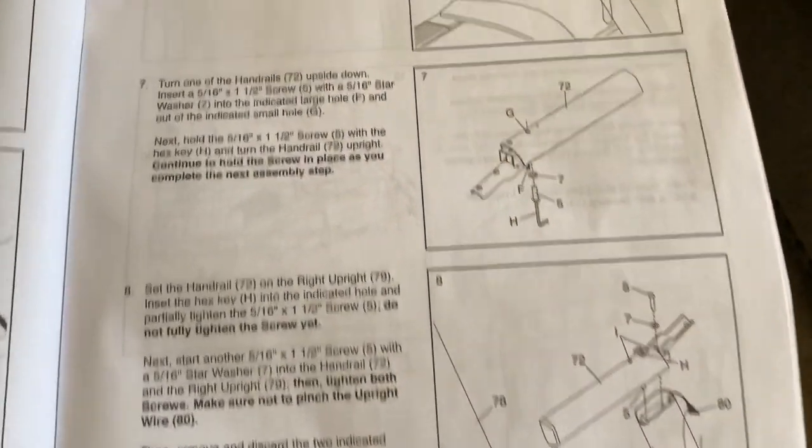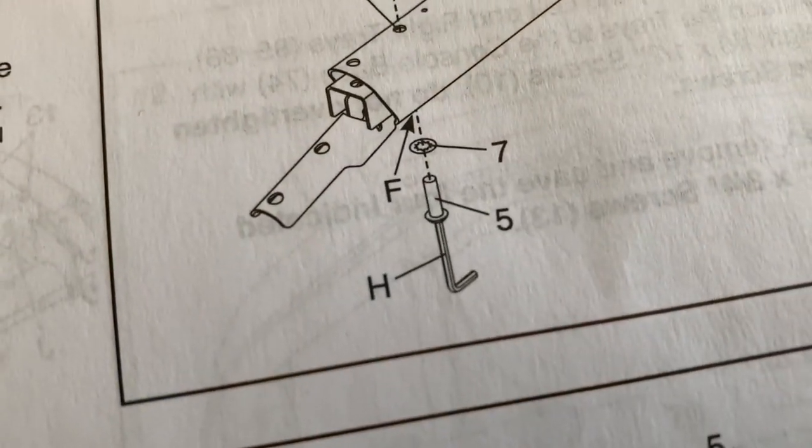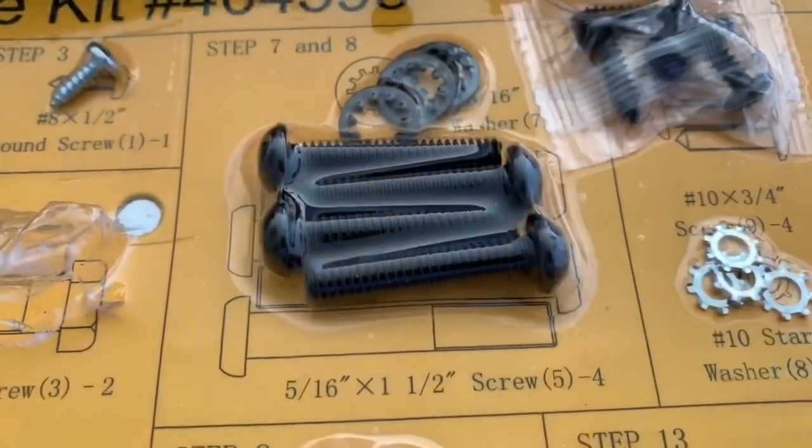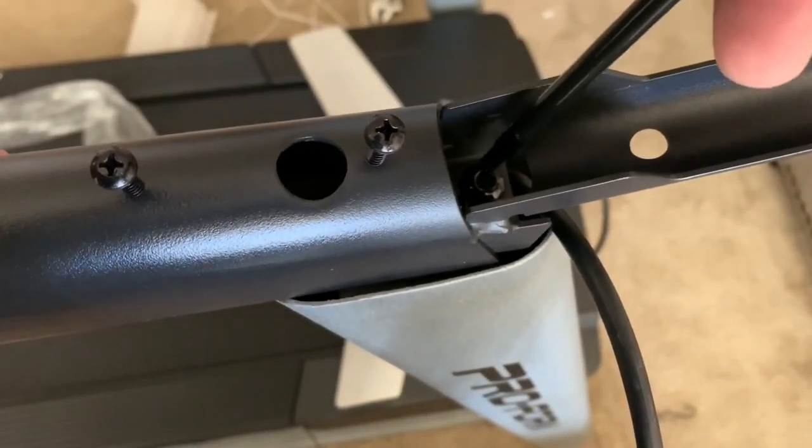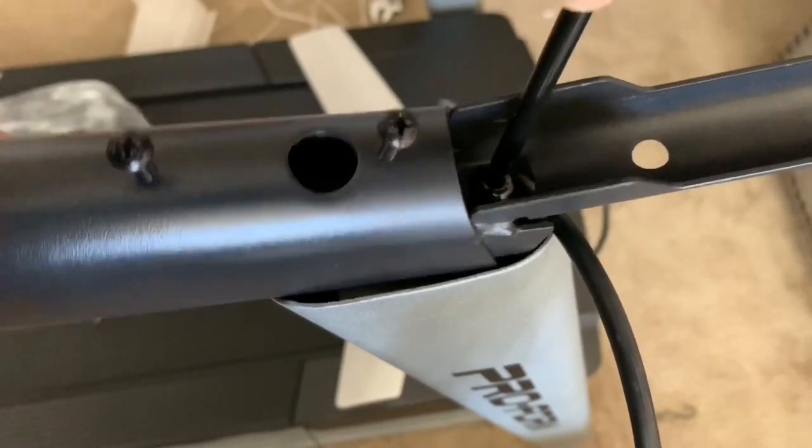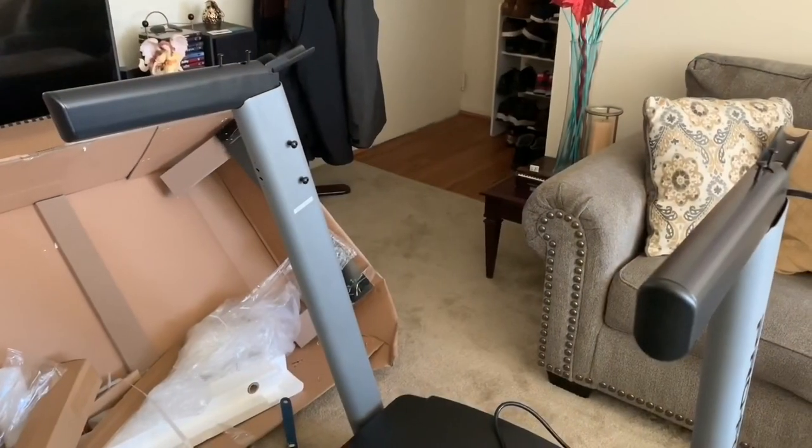Next, the handrails which is from this box. We get screw number five and allen wrench. So let's find it. It's this one, screw number five. Armrest done.